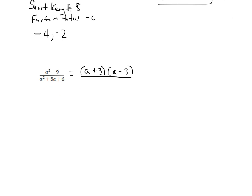In the denominator, what do we have? This is a trinomial, so, again, we're going to do short key. Our key number is going to be 6, and we want factors that total positive 5. The factors of 6 that are going to total positive 5 are going to be 2 and 3. Those multiply up to 6 and add to 5, so we know that this down here is going to factor into a plus 2 and a plus 3.